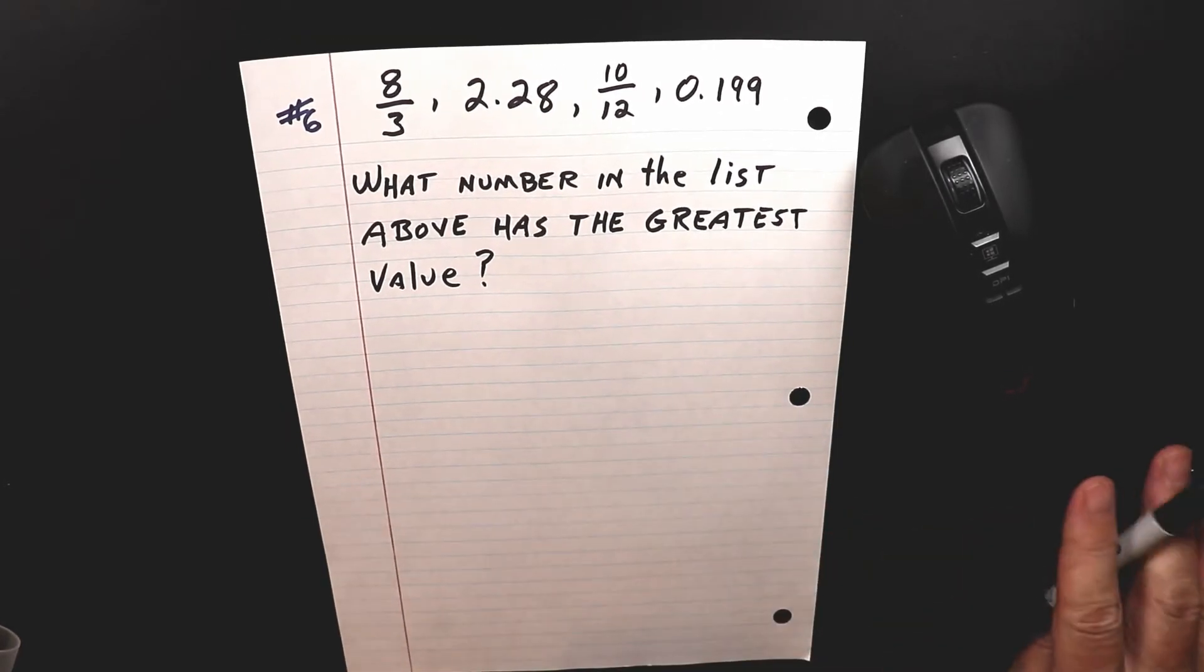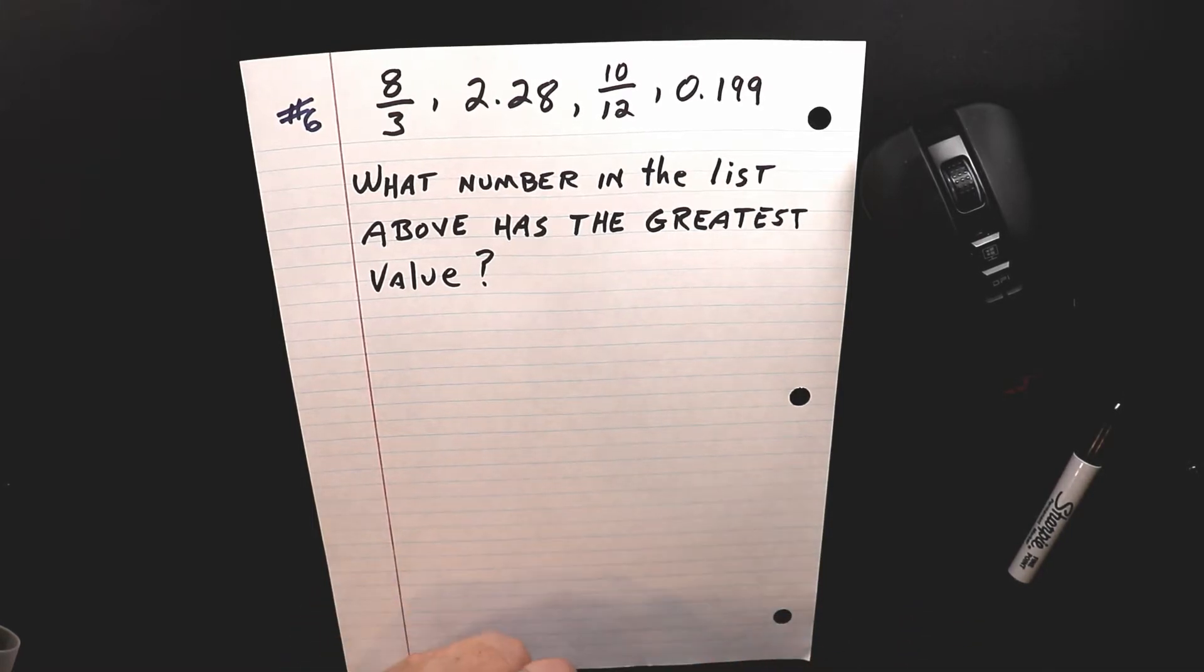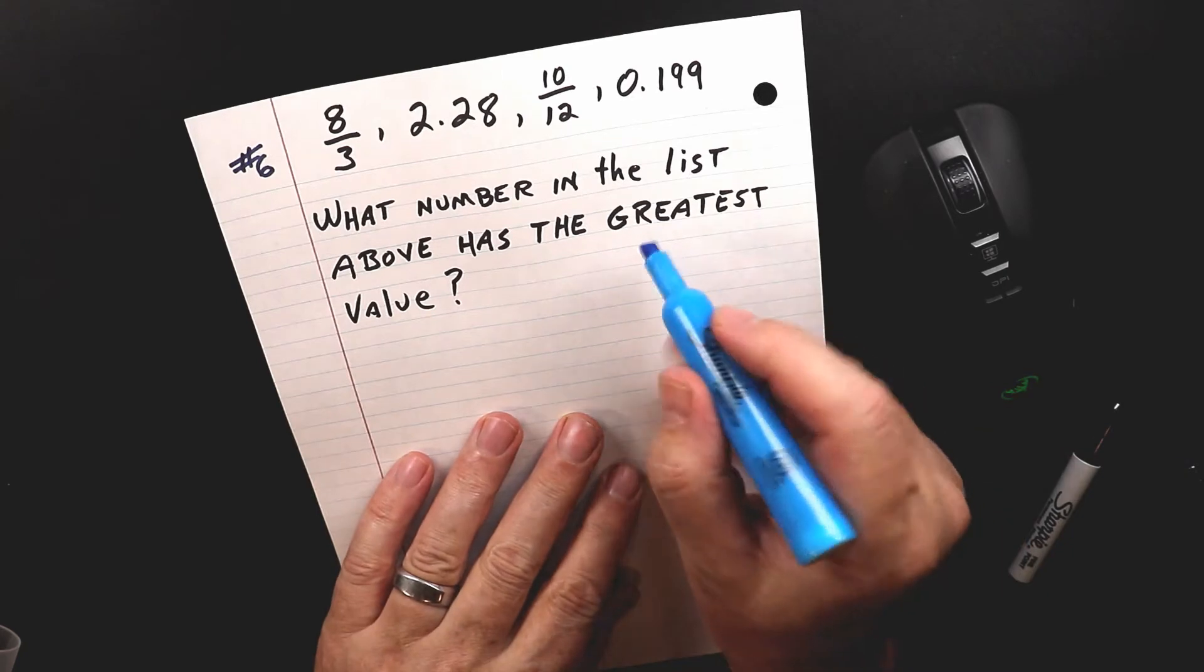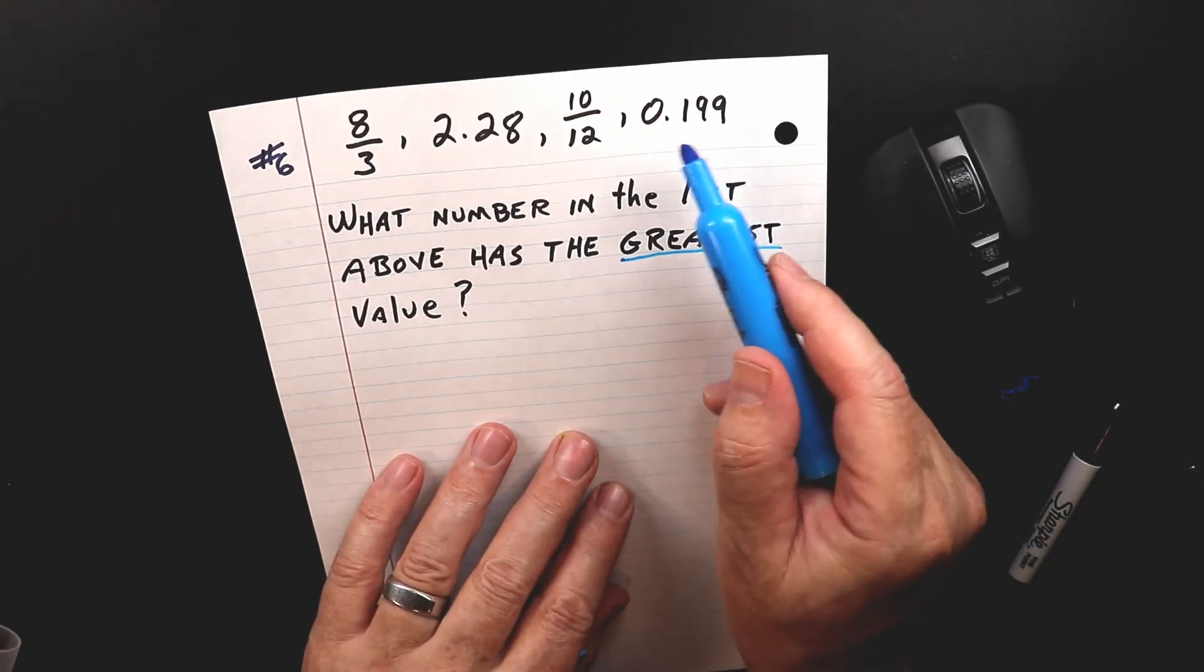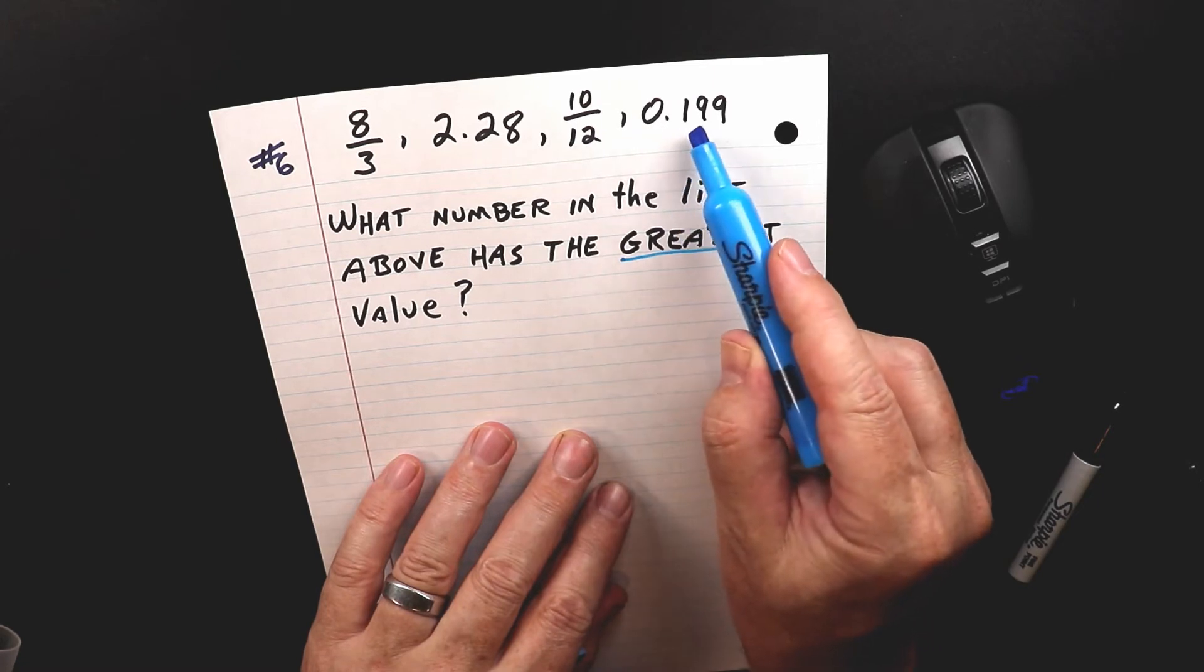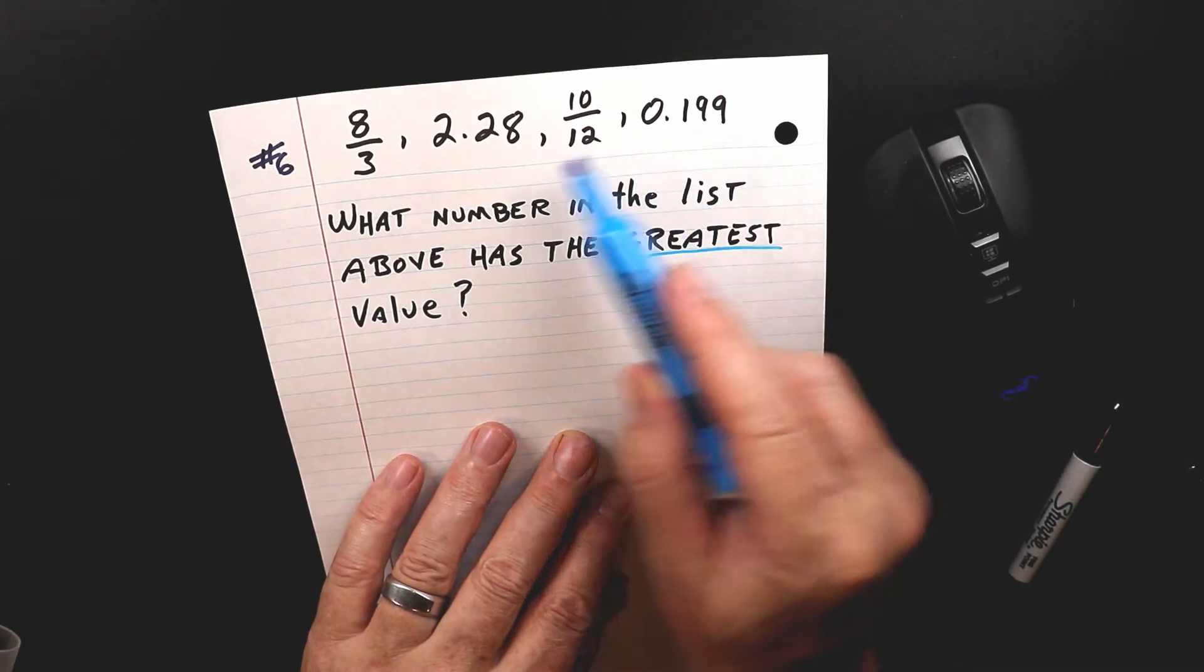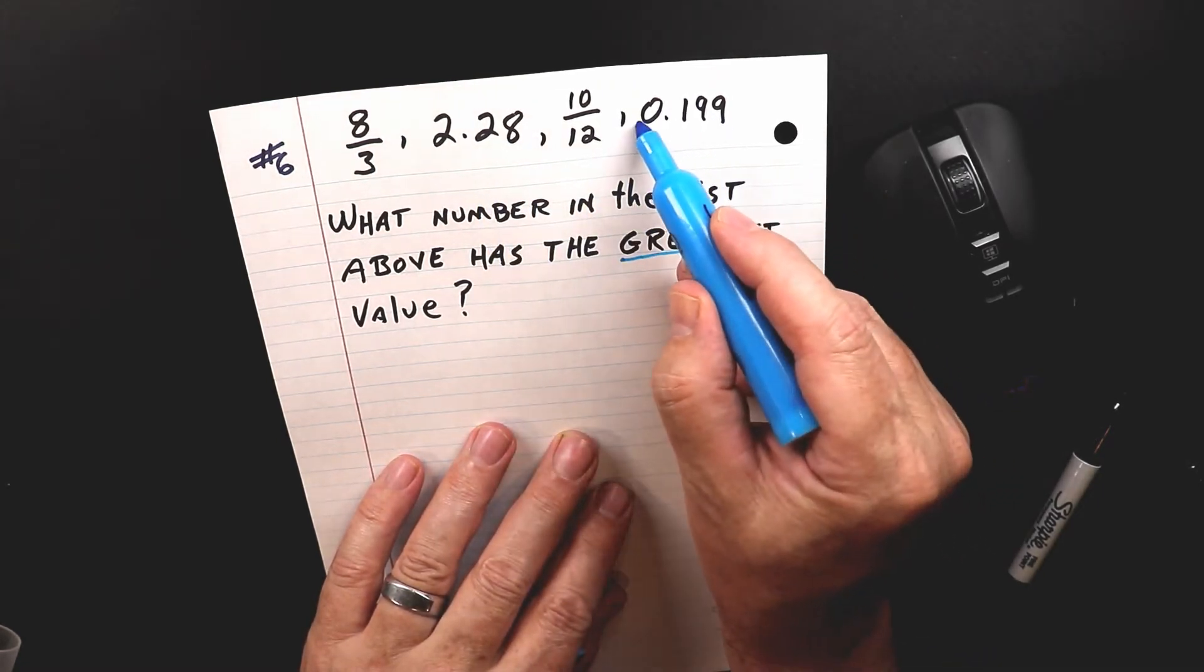So let's do a process of elimination. We're looking for the greatest, the biggest number. So we look right away and say 0.199. We know that this is less than this one. So this one automatically goes away.